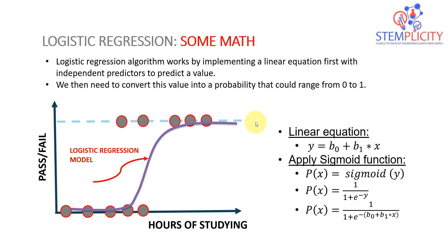Simply put, we moved from a continuous output in our linear equation to a probability ranging from zero to one, which is perfectly suited for our classification problem. The question is: where do we decide whether you're going to succeed or fail? We need to put a threshold somewhere that tells us — if probability is below a certain threshold, you fail; if it's above, you succeed.